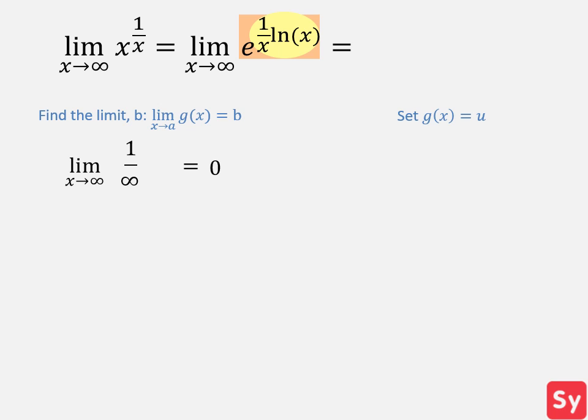Next, we set g of x equal to u. So we have f of u equals e to the u. Finally, we find the limit L. We have the limit of e to the u as u approaches 0. We use substitution and get 1 as our limit. This is the answer.